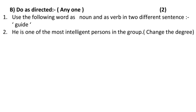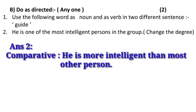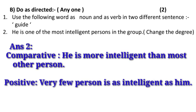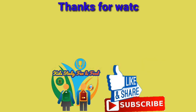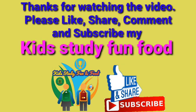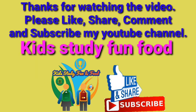Now let us see the second one: 'He is one of the most important persons in the group.' You have to change the degree. Degrees of comparison means positive, comparative, and superlative. Here 'most intelligent' is in superlative form and you have to make two sentences — comparative and positive. Comparative: 'He is more intelligent than most other persons.' Positive: 'Very few persons are as intelligent as him.' In this manner we have made both forms and completed activity one.